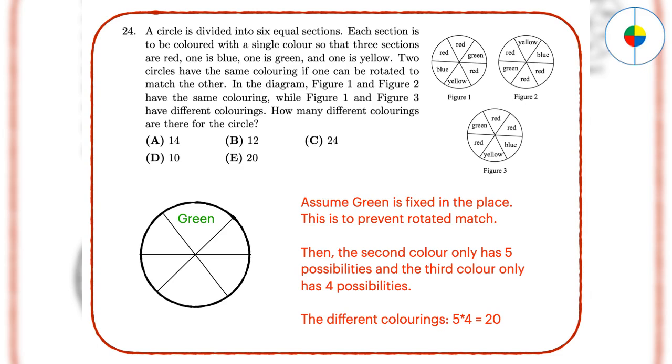Question 24: This can be simplified to a very similar question. In the six sections on the circle, there are three sections that can be placed blue, green, or yellow. The red doesn't matter because when the other colors are determined, all other sections can be placed red. Also, you need to consider one color is in the fixed place, otherwise it can be rotated to match the other. So the original question can be changed to a permutation without repetition with five possibilities and two choices. The answer will be 5 times 4 equals 20.